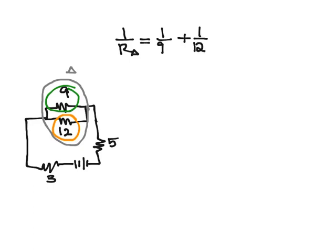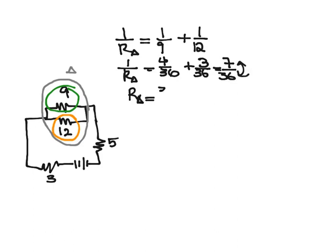I know that 1 ninth and 1 twelfth have a common denominator of 36, so I have 1 over R_triangle is equal to 4 over 36, because 1 ninth is 4 over 36, plus 1 twelfth, which is 3 divided by 36, and I end up with 7 divided by 36. Now I need to take the reciprocal, I have R_triangle is equal to 36 over 7, which it turns out is about 5.14 ohms.